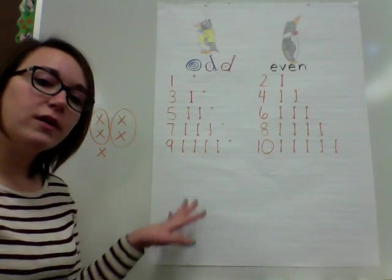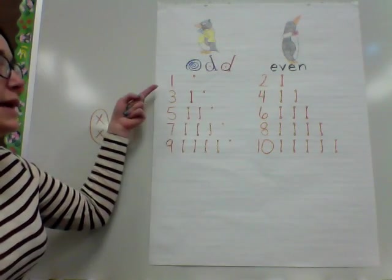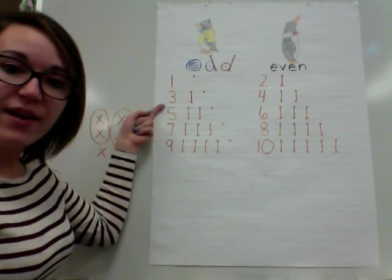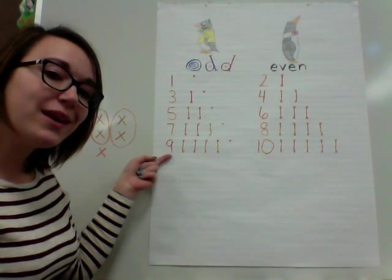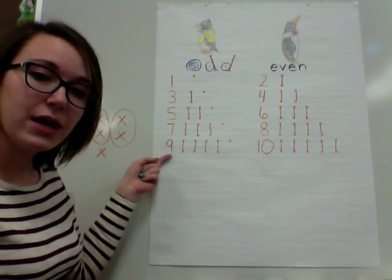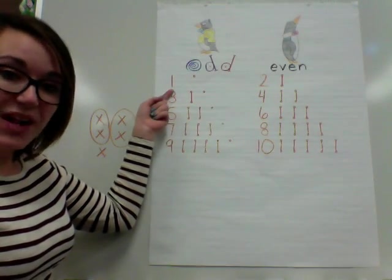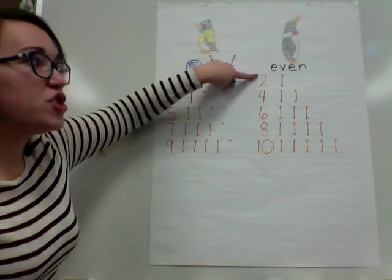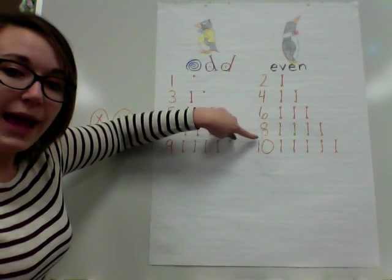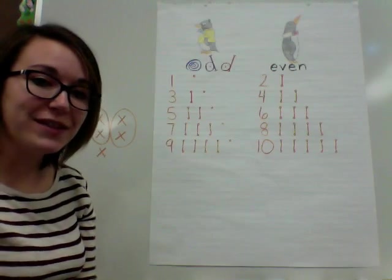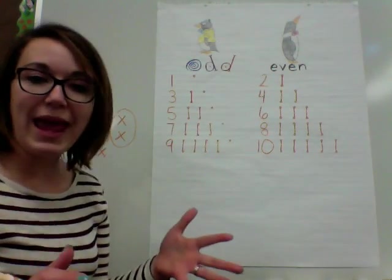The pattern that you will see if we continue to go is that the odd numbers always end in the numbers one, three, five, seven, and nine. So even the number eleven, if we drew it over here, because it ends with a one, it would be an odd number. Numbers that end in two, four, six, eight, and ten are even numbers, and those will always be split evenly without any leftovers.